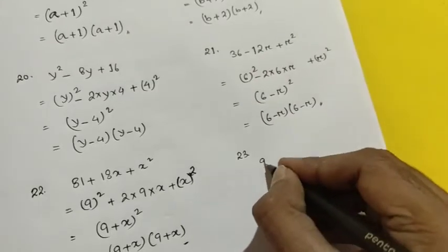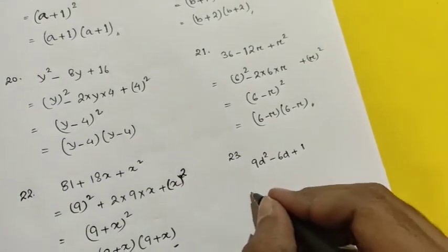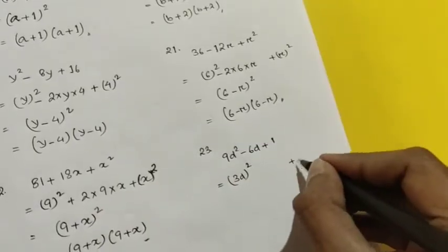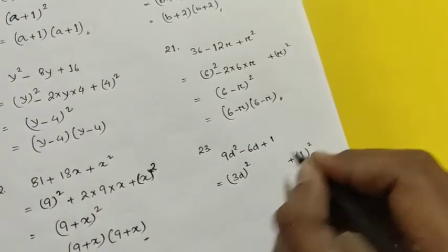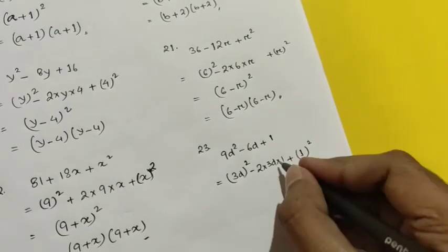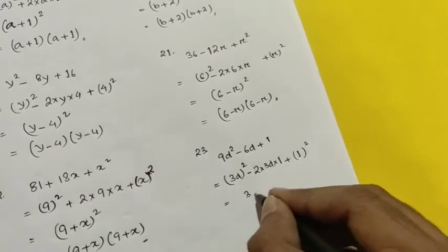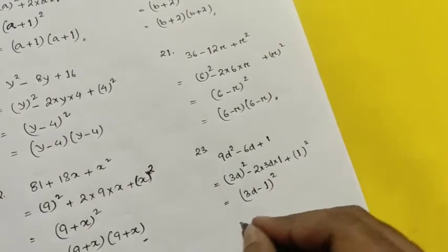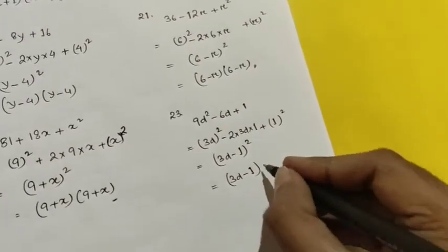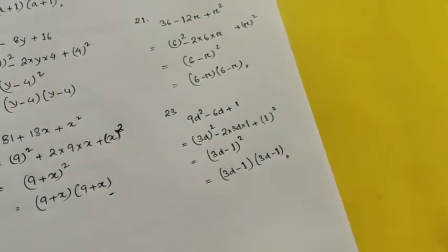Question number 23 is 9d² - 6d + 1. Here 9d² can be written as (3d)², and 1 can be written as 1 whole square. Since the middle term is minus, we write minus 2 into 3d into 1. Using a² - 2ab + b² = (a-b)², this gives (3d-1)², which in product form is (3d-1)(3d-1). This is the solution for question number 23.